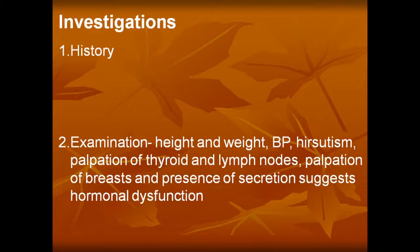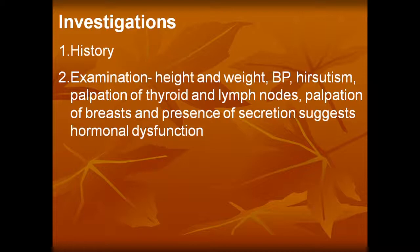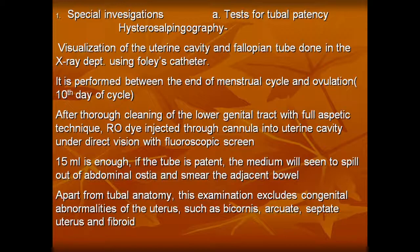Investigations for female infertility include history, examination of height, weight, blood pressure, hirsutism, palpation of thyroid and lymph nodes, palpation of the breast — presence of secretion suggests hormonal dysfunction. Special investigations include tests for tubal patency. First is hysterosalpingography — visualization of the uterine cavity and the fallopian tubes is done in the x-ray department using a Foley's catheter. It is performed between the end of the menstrual cycle and ovulation.